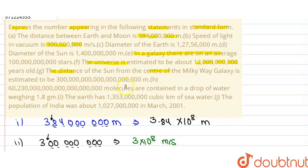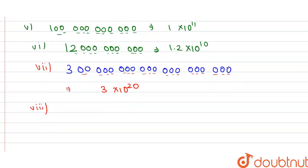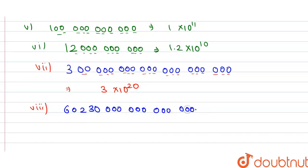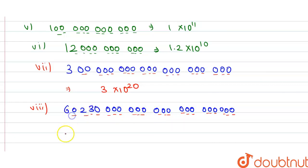Now the next number: 602,300,000,000,000,000,000,000 molecules are contained in a drop of water weighing 1.8 grams. The number is 6,023 followed by six pairs of three zeros. Just count the digits: 1, 2, 3, 4, 5, 6, 7, 8, 9, 10, 11, 12, 13, 14, 15, 16, 17, 18, 19, 20, 21, and 22. So we can write 6.023 × 10²².